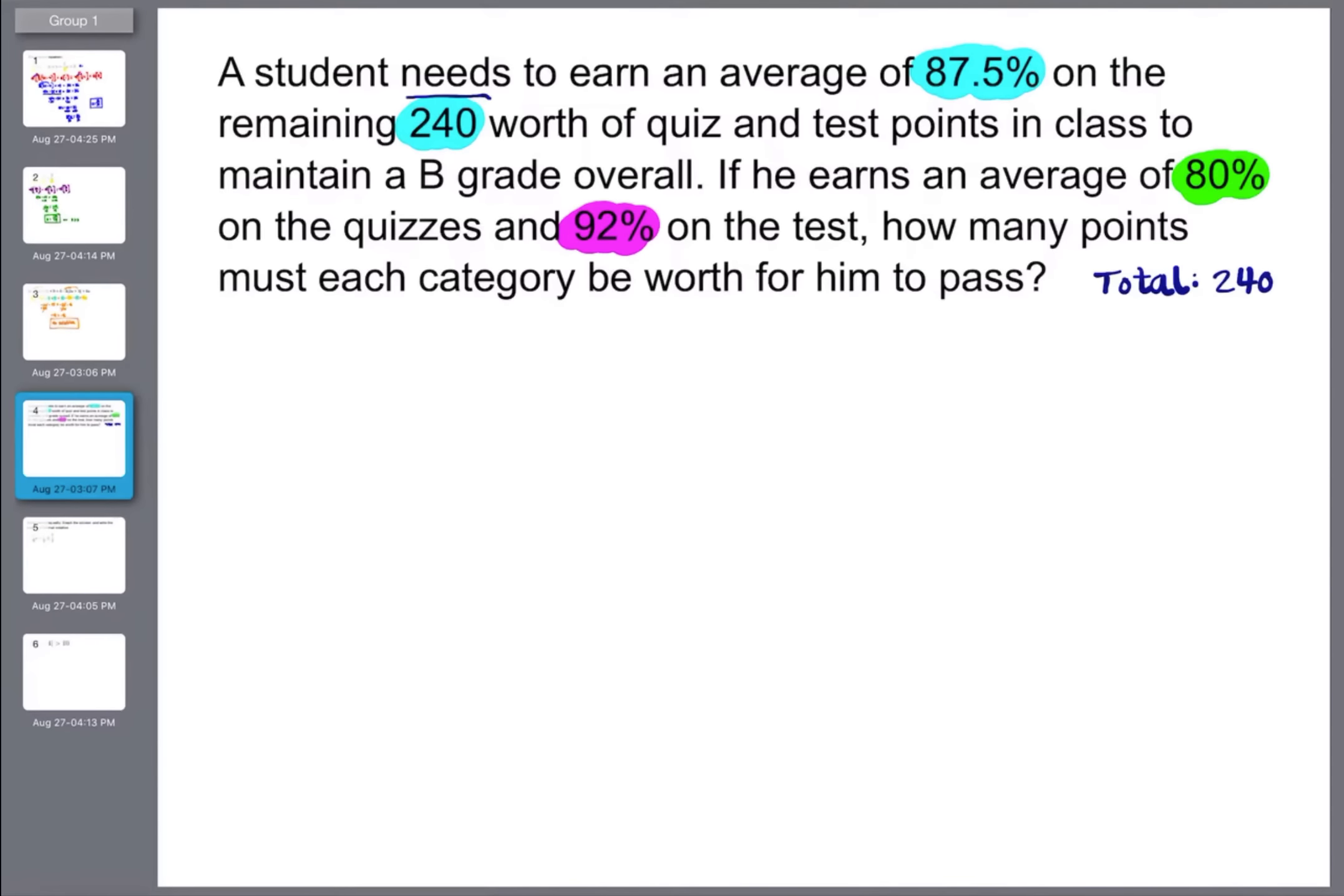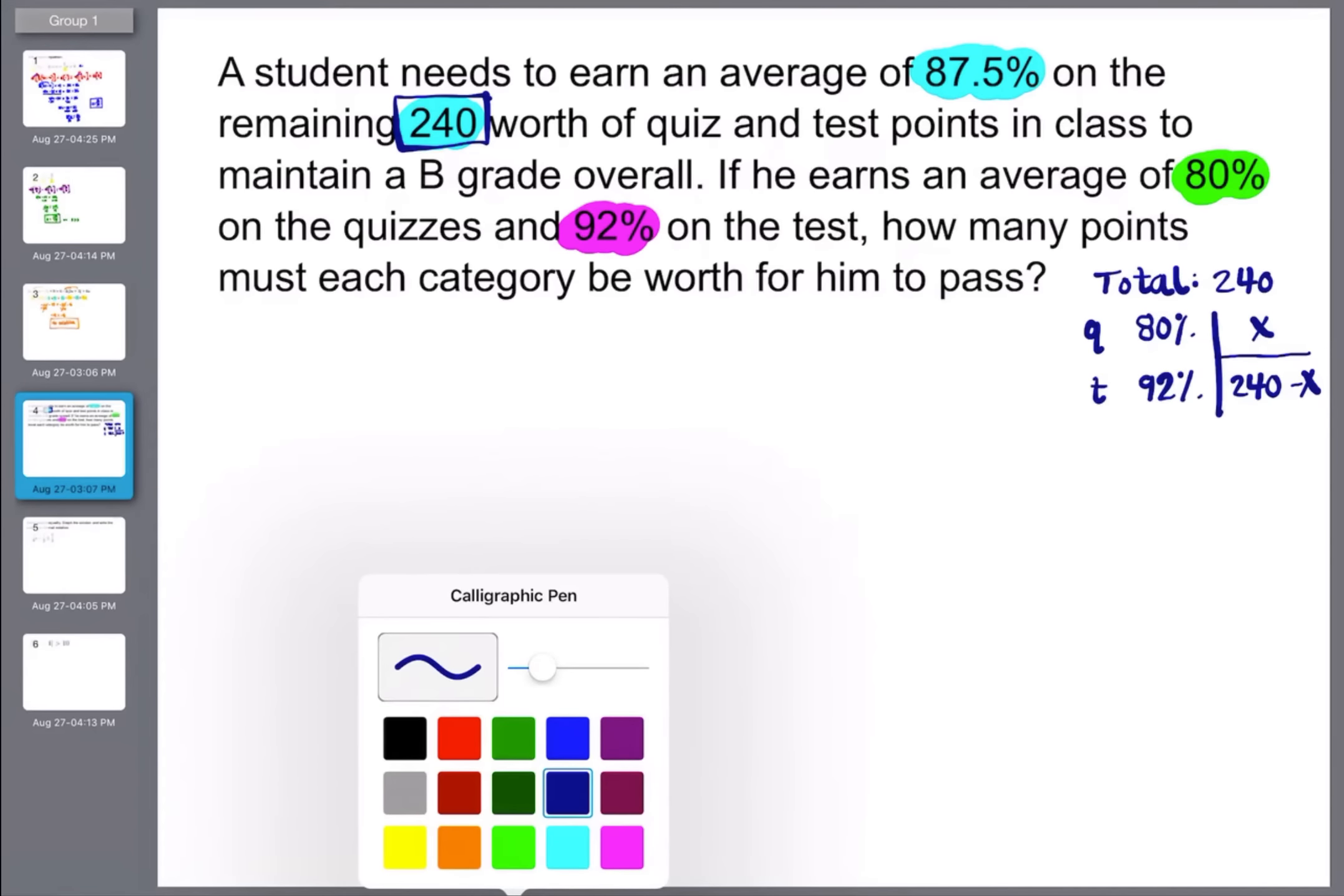So how many points must each category be worth for him to pass? Now, you notice that there is a total of 240 points. We said that there's 240 points remaining right here. And in that 240 points, we're going to have them split into the 80%, which is the quiz category. And then we have the test category, which he got 92% on. But we need to know how many points are going to be in each of those categories. So if we call this amount x, the second one is just going to be 240 minus x. Just like if we were going to invest money, if we had $10,000 to invest, and we don't know how much to put in each account, we would put x in the first amount and then 10,000 minus x in the second account.